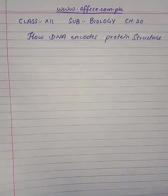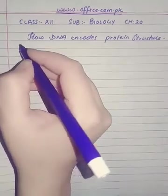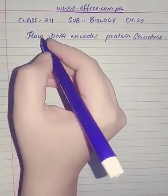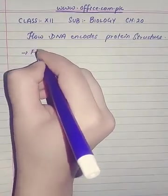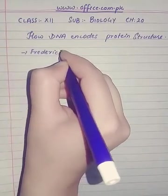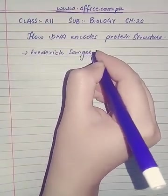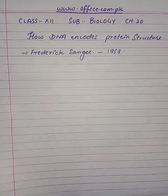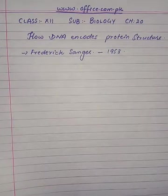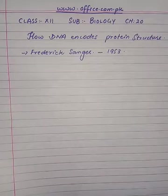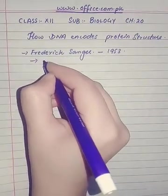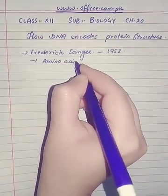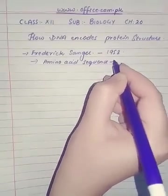First of all we will discuss Frederick Sanger. The year was 1953. Sanger was a biochemist from England, and his name needs no introduction because he is very famous for his work on discovering and describing the complete structure of the very important hormone insulin. He worked on the amino acid sequence of insulin.